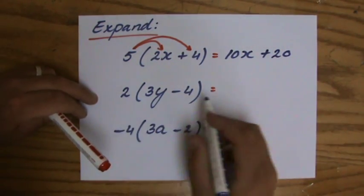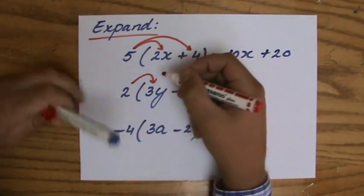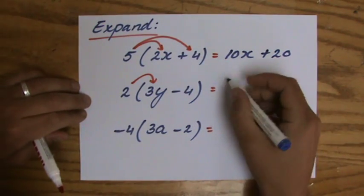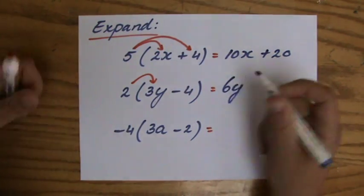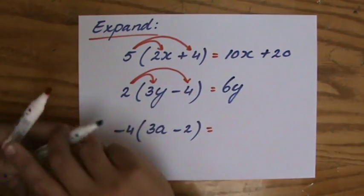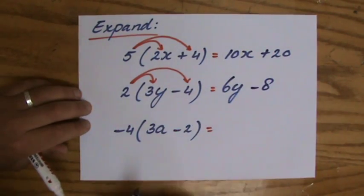Next question. 2, opening bracket, 3y minus 4. 2 times 3y is 6y. Let me get rid of those caps. That is 6y. And also 2 times minus 4, which is going to be minus 8. There we go. I have expanded it.